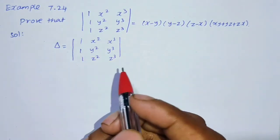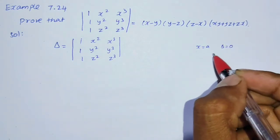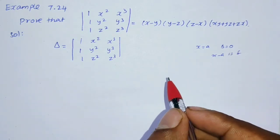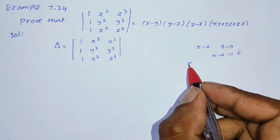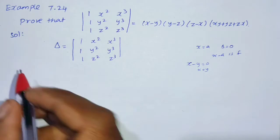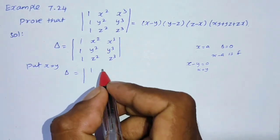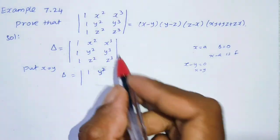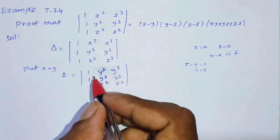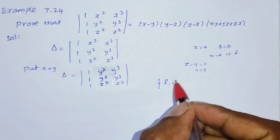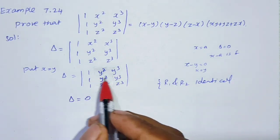We substitute some value to show delta equals zero. If x equals y, we substitute into the delta matrix. Substituting x equal to y into the first row gives 1, y², y³ and the second row is also 1, y², y³, and the third row is 1, z², z³. So row one and row two are identical. When two rows are identical, the determinant is zero.